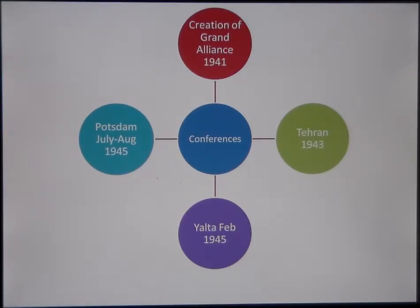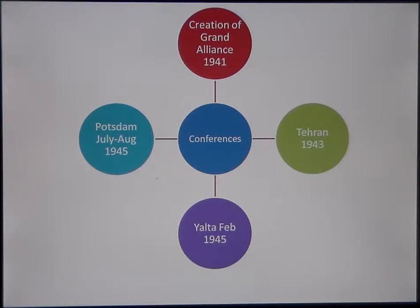What happened next was the creation of the Grand Alliance. The one thing that brought it together was the need to defeat Hitler — the USSR, Britain and the USA all coming together. Their ideological differences, their communist and capitalist ideas, were put to one side, with the main focus being on defeating Hitler. But under the surface, those tensions between communism and capitalism were still bubbling away.